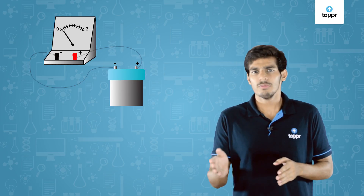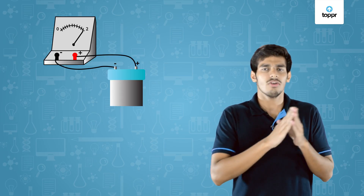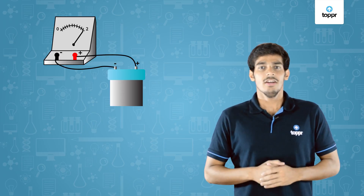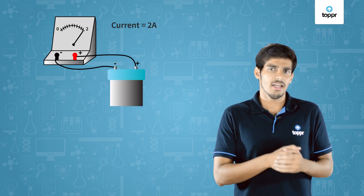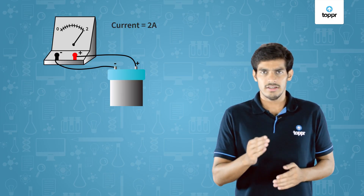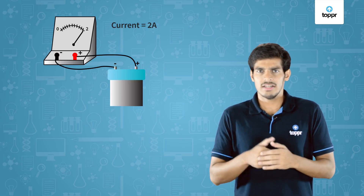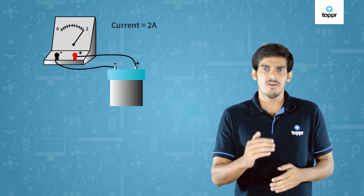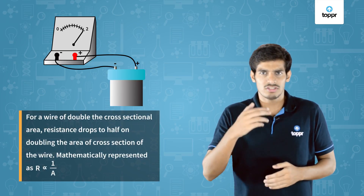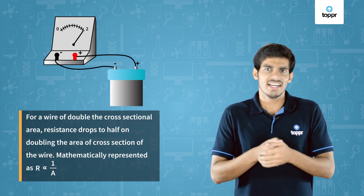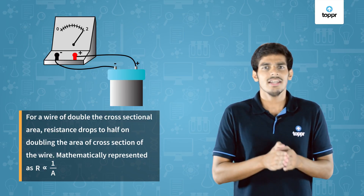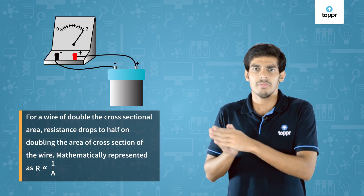Now, if I remove this wire and connect a wire which has the area of cross-section twice of our original wire, when we calculate the value of current, we find the current has doubled. Again applying Ohm's law V = IR, where V is kept constant, the value of I doubled, so the resistance is half of its initial value. Therefore, on doubling the area of cross-section of the wire, the resistance drops to half. Thus, our second inference is: resistance is inversely proportional to the area of cross-section of the metallic wire used.